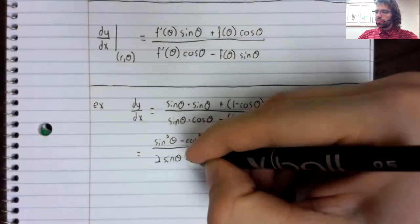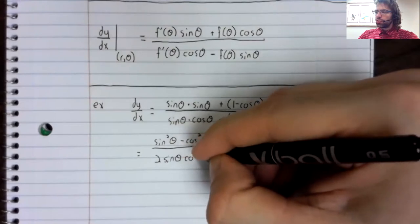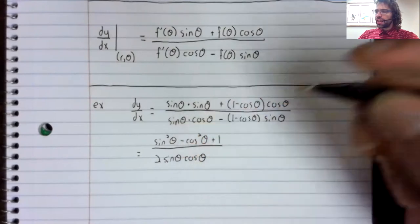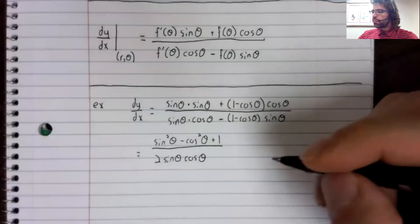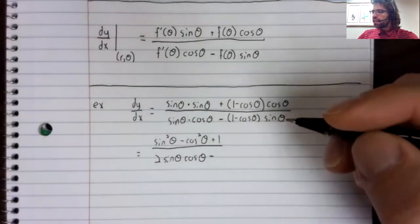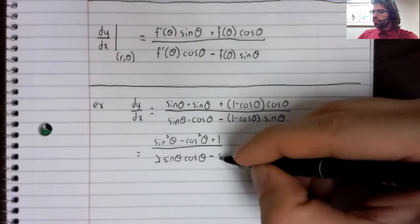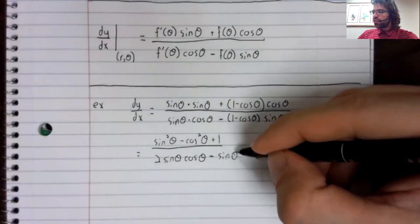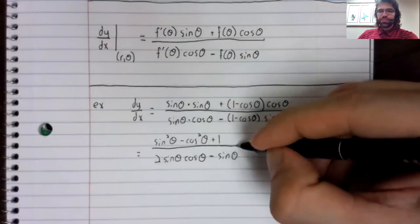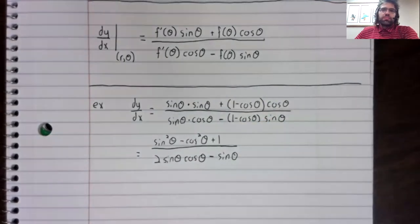So they don't cancel out, they add minus the sine of theta. But that's about as simple as it's possible to make this thing.